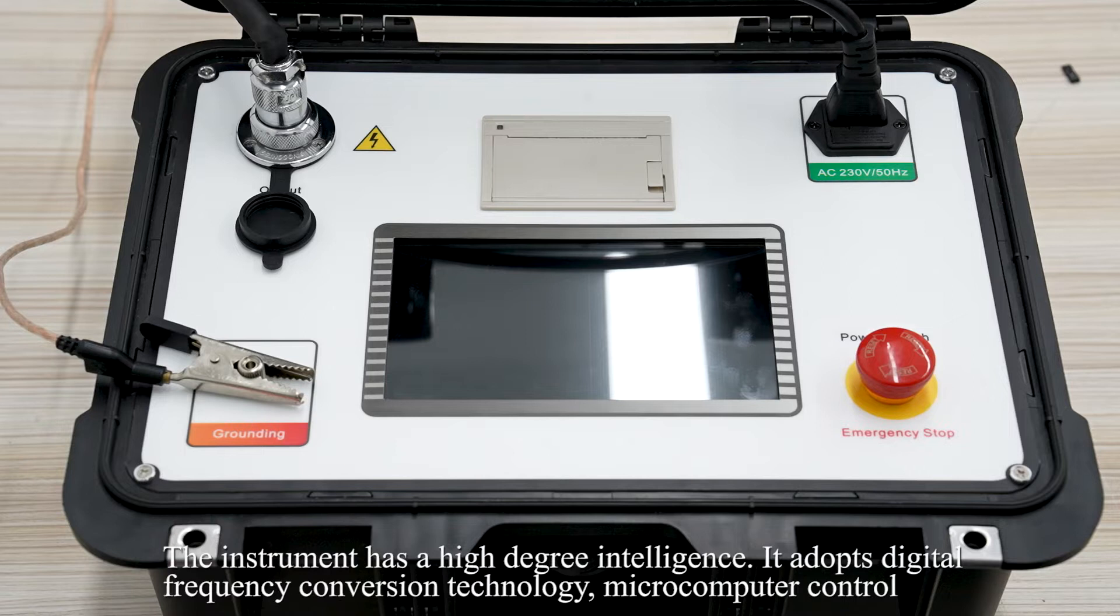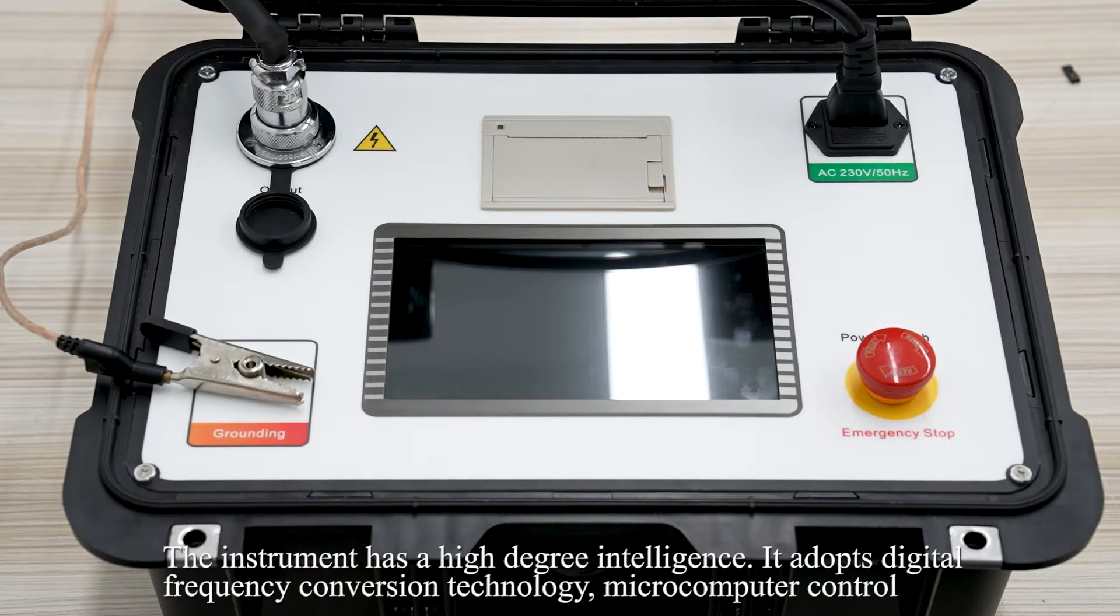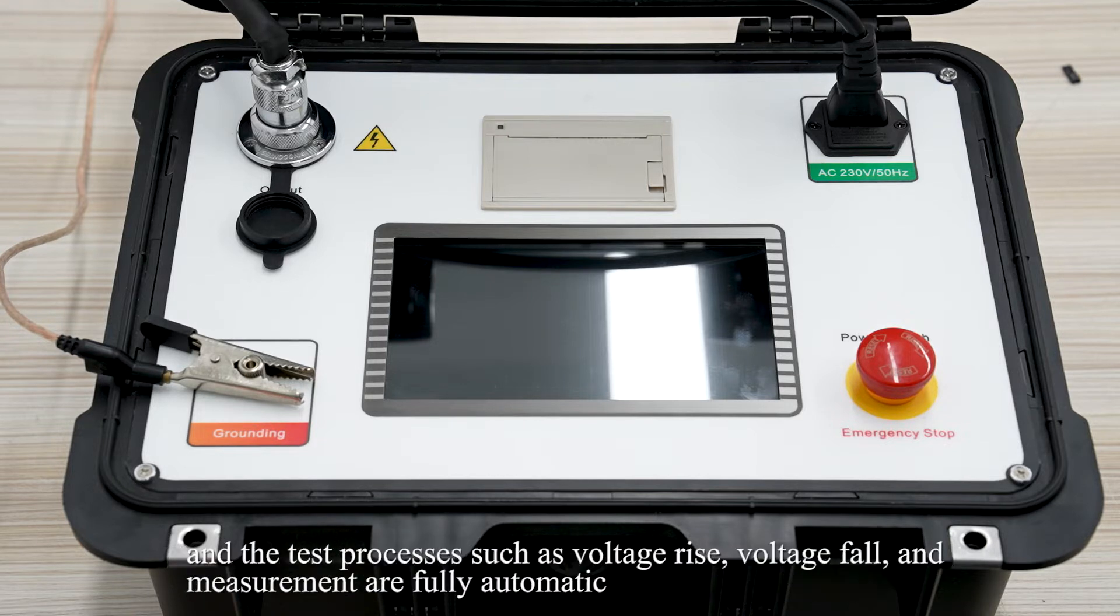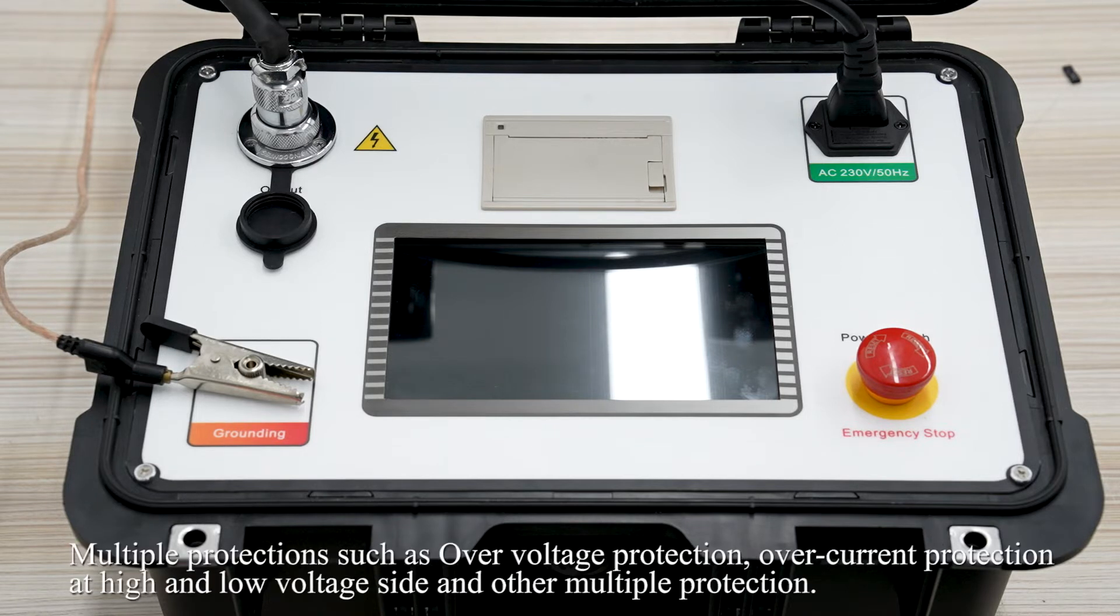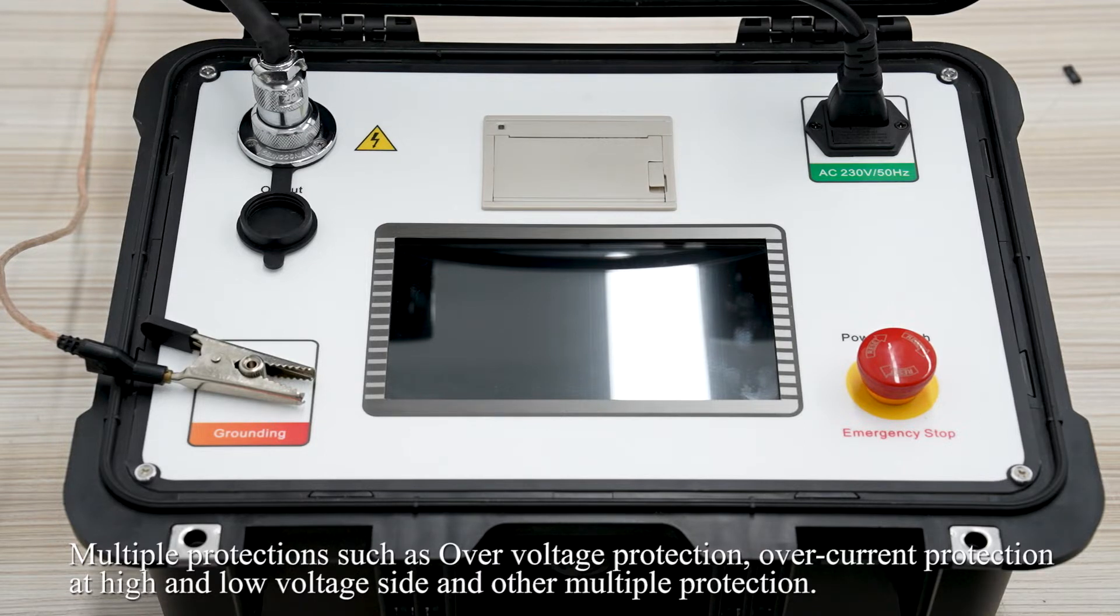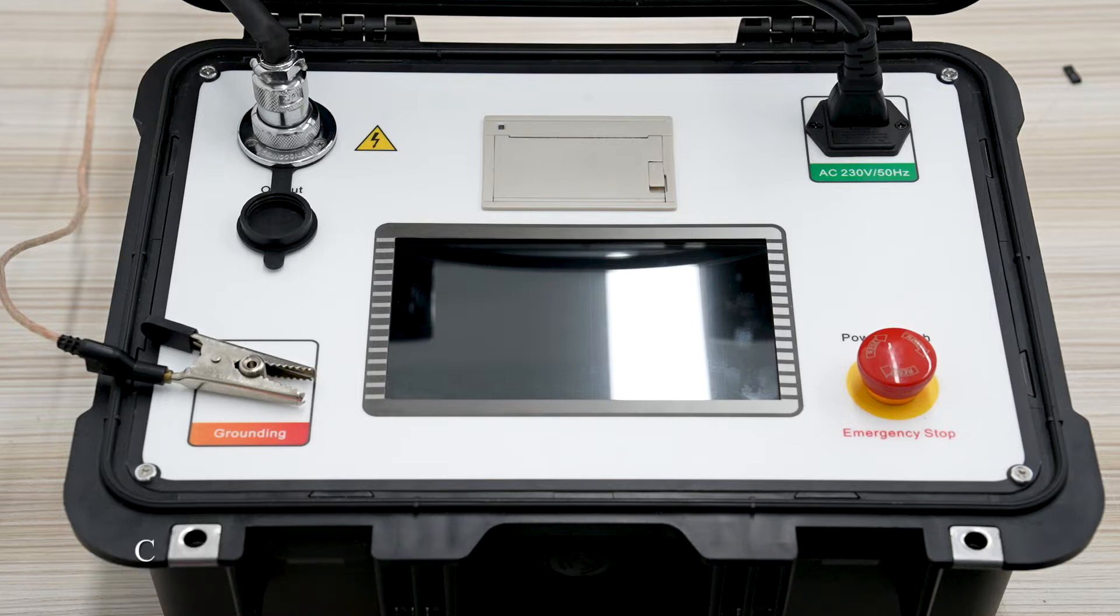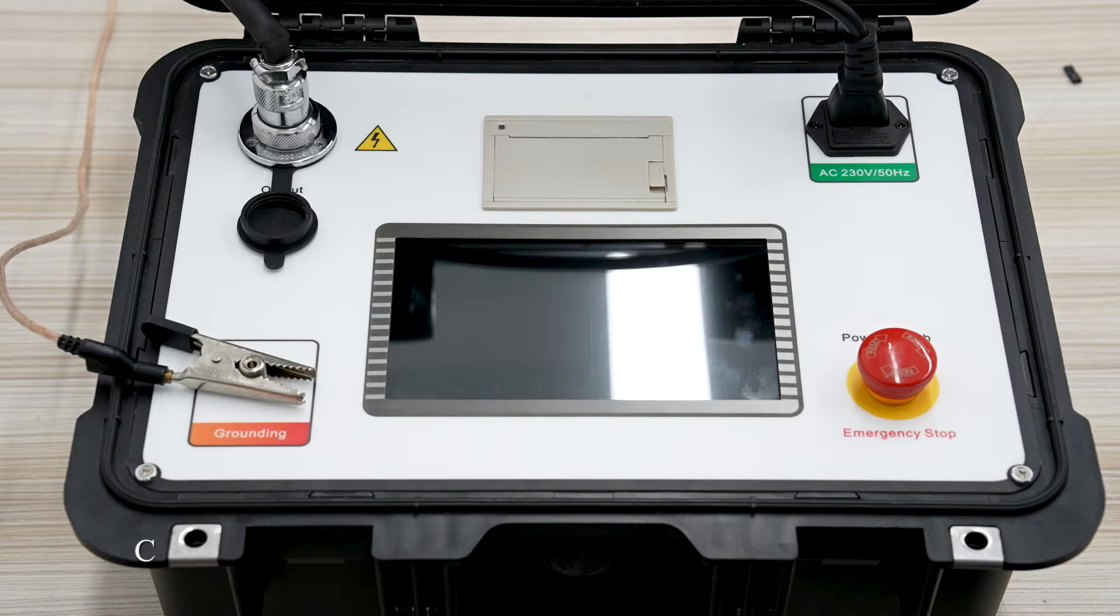The instrument has a high degree of intelligence. It adopts digital frequency conversion technology, microcomputer control, and the test process such as voltage rise and measurements are fully automatic. Multiple protections such as over-voltage protection, over-current protection at the high and low-voltage side. High voltage current and voltage data are directly obtained through sampling and high voltage side, and the data are true and accurate.